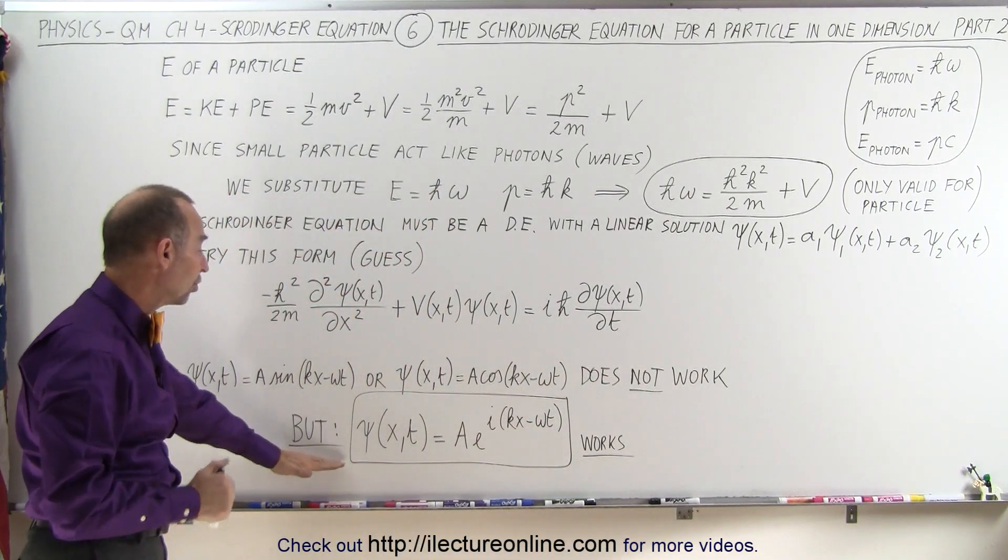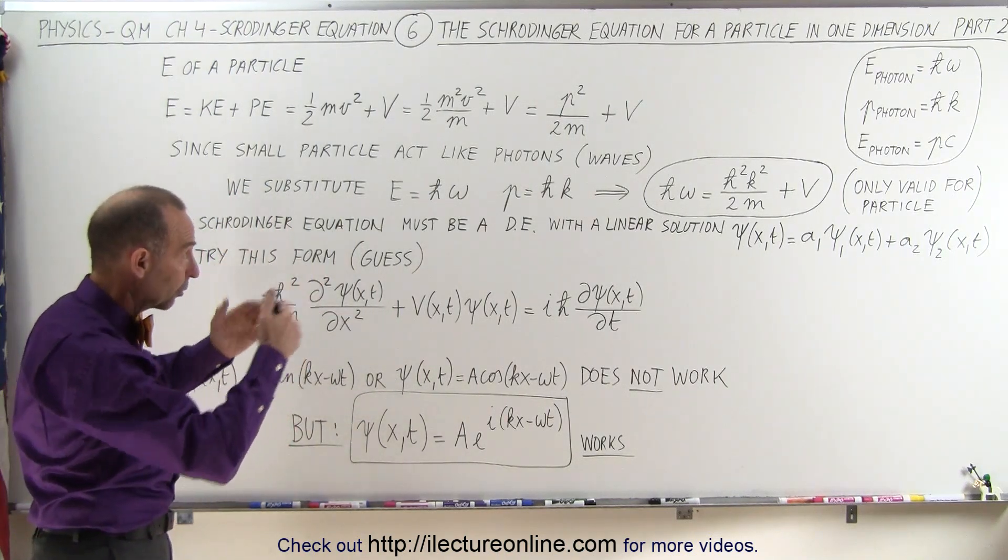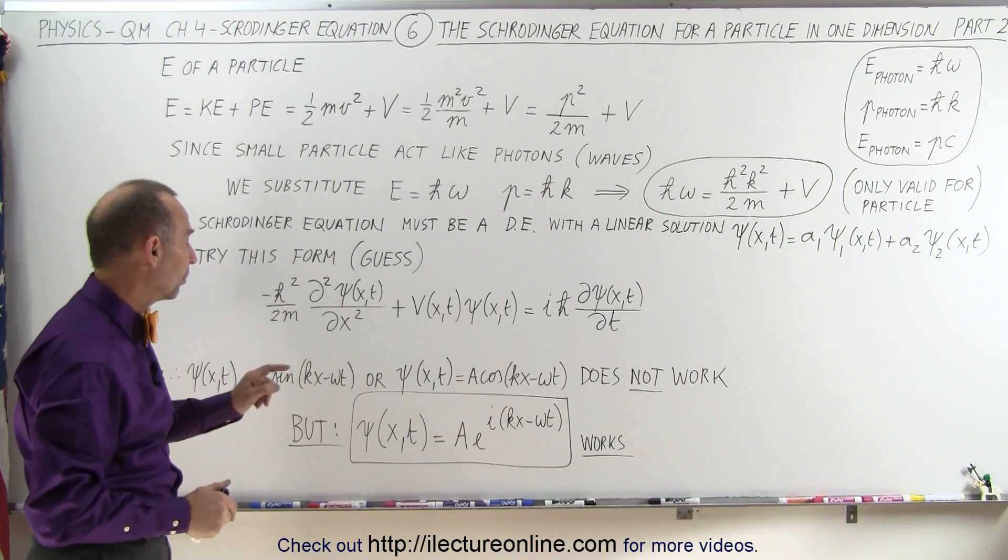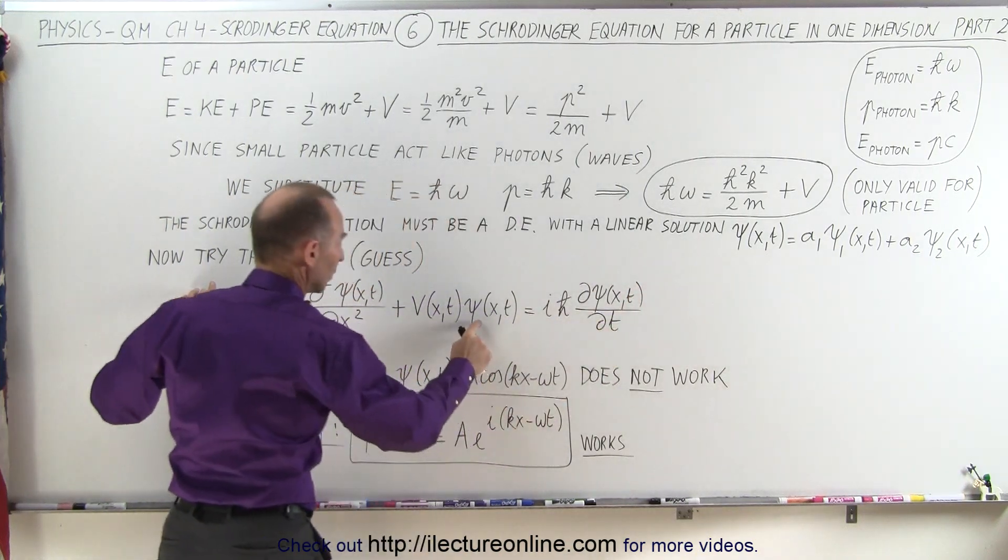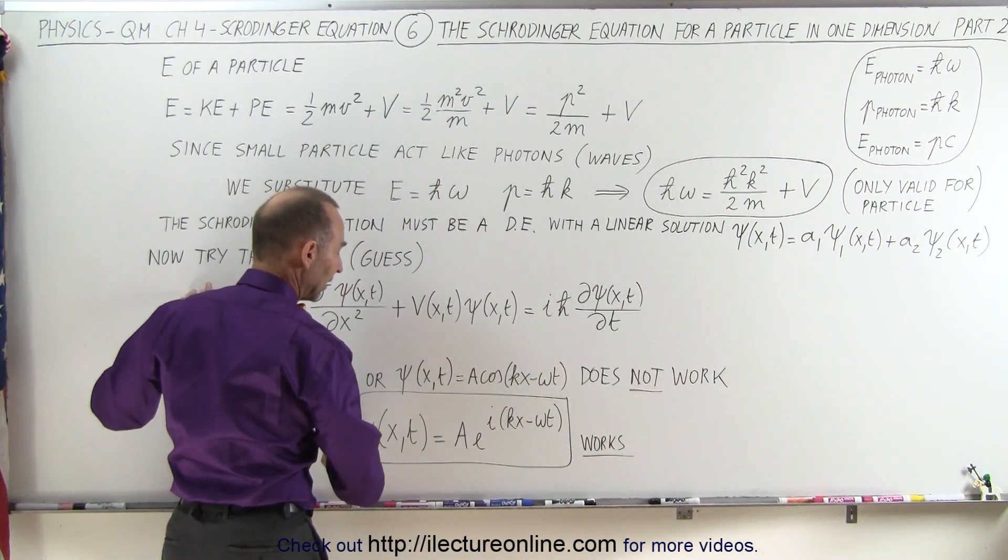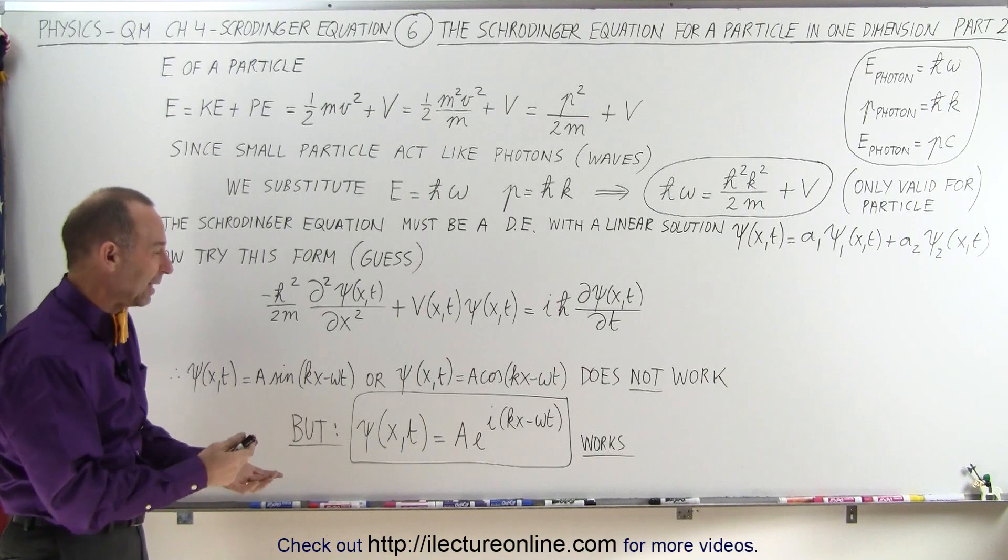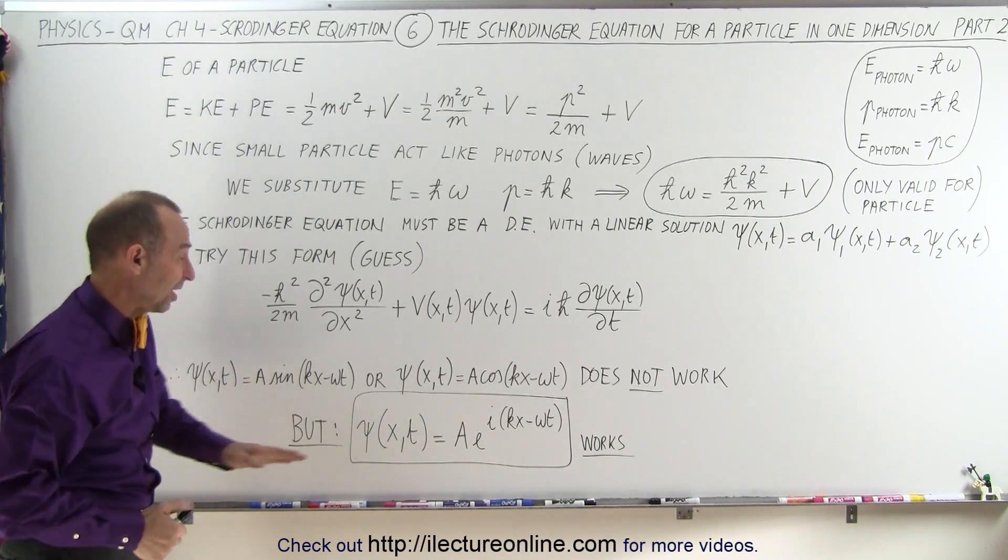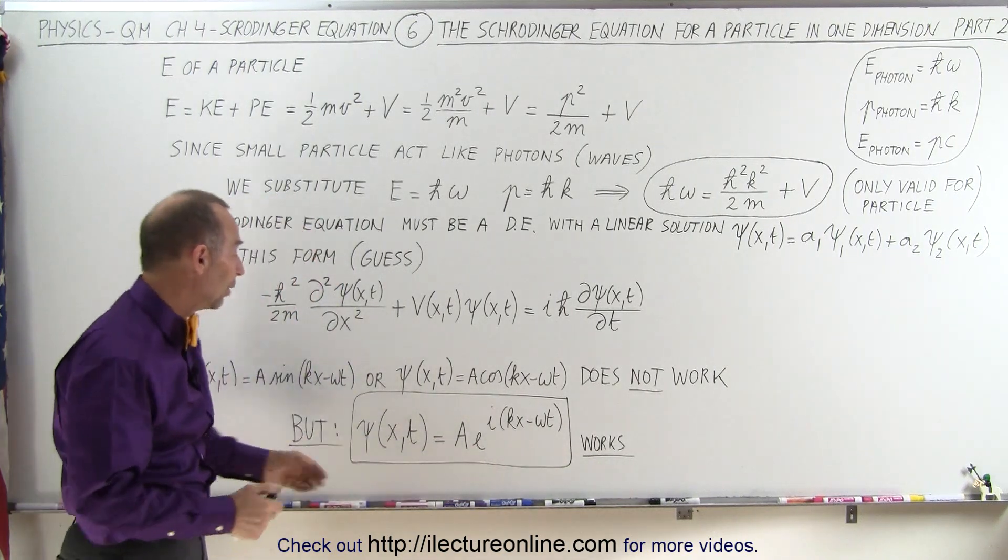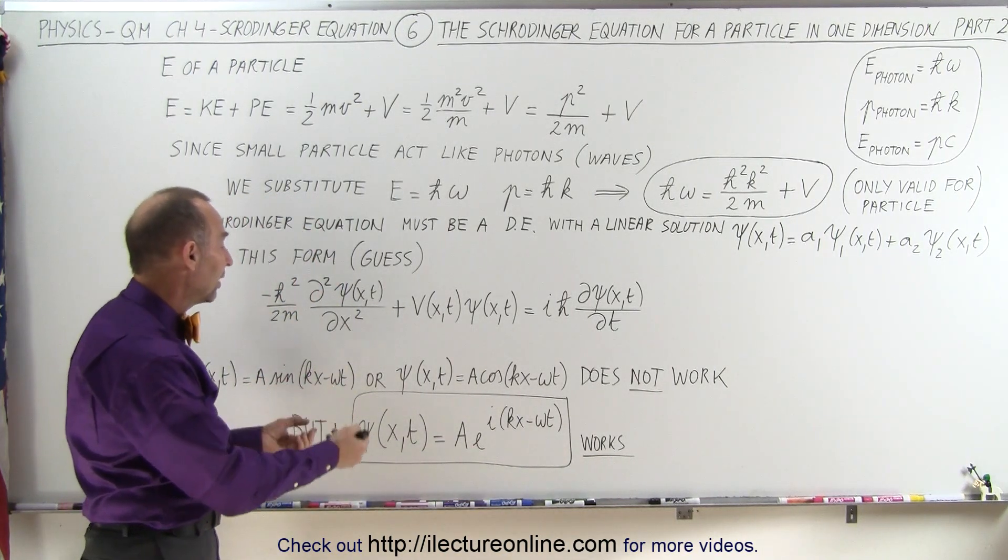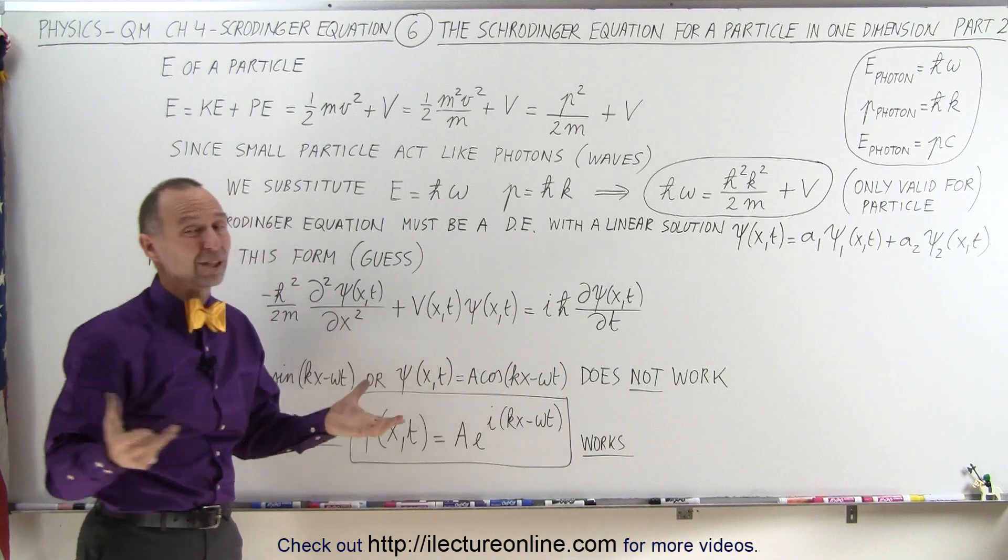However, a solution in this form will work with this equation and we're going to show you in the third video of the set of three why this equation works. But we can say that if we assume this to be the differential equation of the Schrödinger equation, we can then find the solution in this particular format and we know that that one works. And that's part of the reason why they chose that equation. They said, we're going to assume that the equation looks like this in its format. So therefore, in order to find the differential equation that we can find this as a solution, we work ourselves backwards and say this must be the format of the equation. That's really the way they approached it.